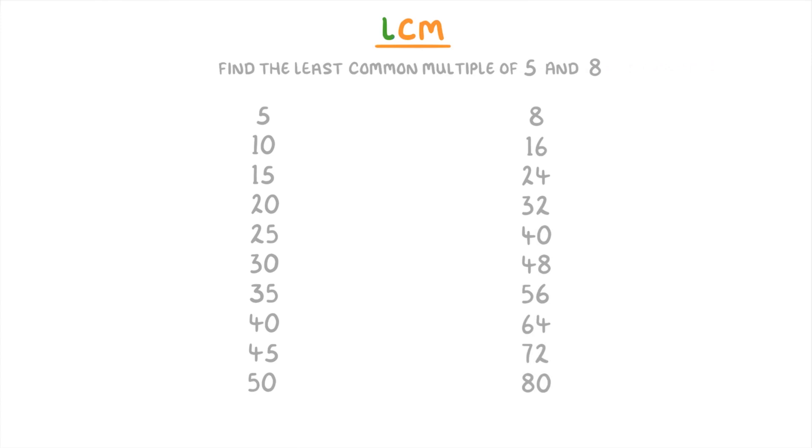Then if we compare these two lists, we can see that 40 is the only multiple that's common to both lists, and therefore 40 must be the lowest common multiple, or LCM.